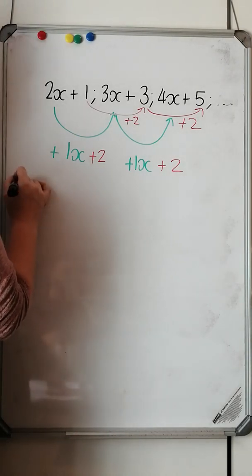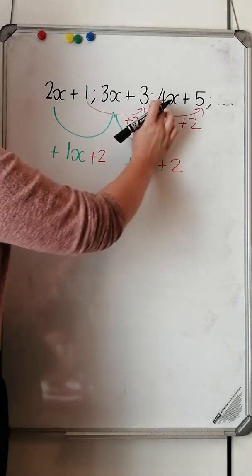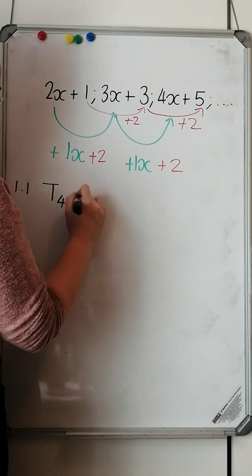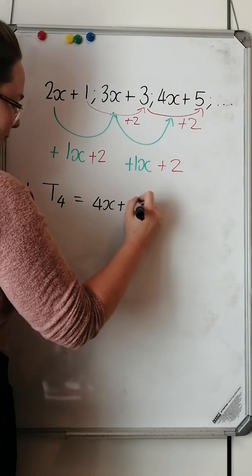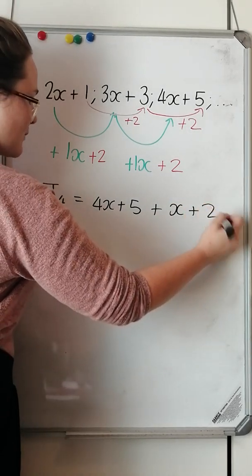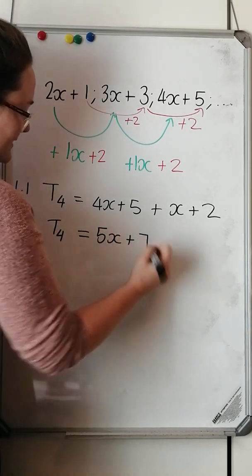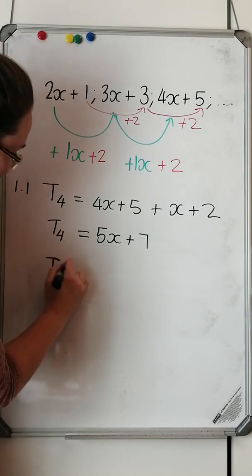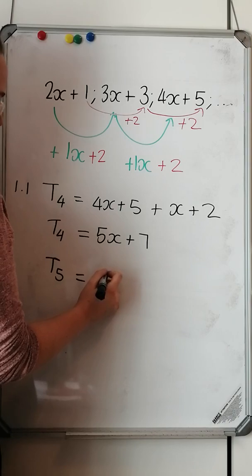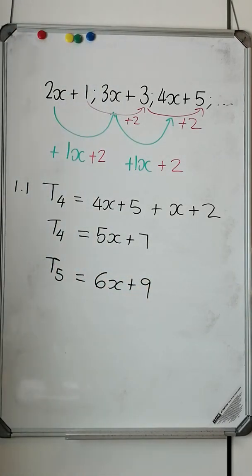To answer the first question — give me the next two terms of the sequence — I would say the fourth term is 4x plus 5, plus the constant difference x plus 2, which gives 5x plus 7. The fifth term: I take 5x plus 7 and add the constant difference, giving me 6x plus 9. And those would be the next two terms of the sequence.